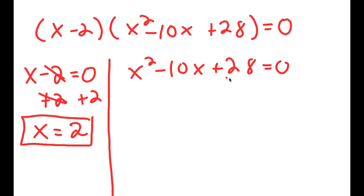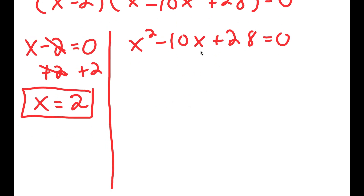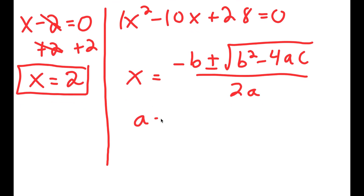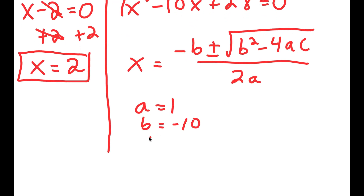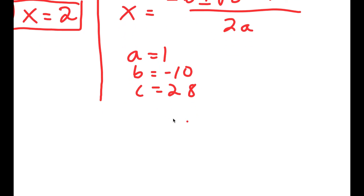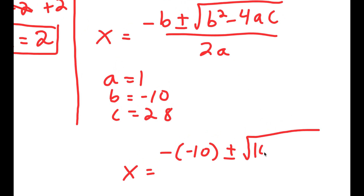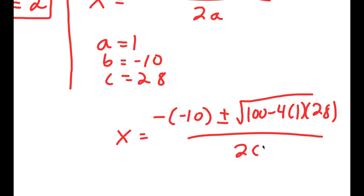For x squared minus 10x plus 28 equals 0, I can solve this using the quadratic formula because this is a quadratic equation. The quadratic formula is negative b plus or minus the square root of b squared minus 4ac, all over 2a. So I get x equals negative of negative 10, plus or minus the square root of negative 10 squared — which is 100 — minus 4 times a, which is 1, times c, which is 28, all over 2 times 1.